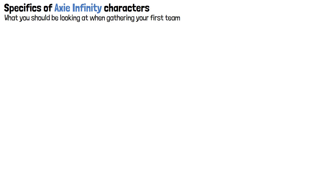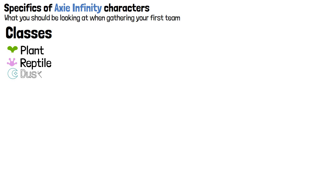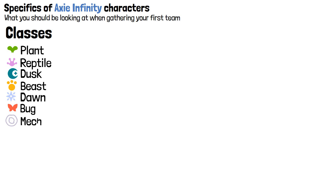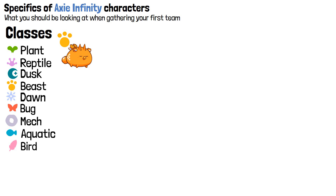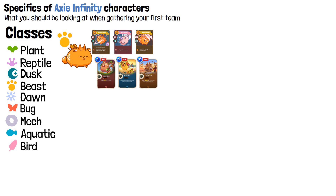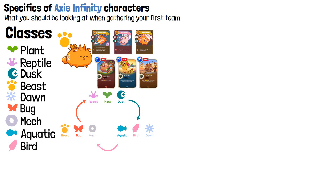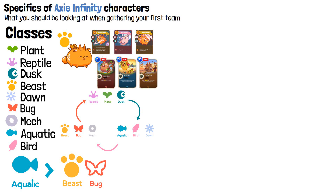In total, there are 9 different Axie classes: Plant, Reptile, Dusk, Beast, Dawn, Bug, Mech, Aquatic, and Bird. Depending on the type of Axies you possess, you can execute different attacks or defense moves on your rivals. Certain classes also have an advantage over others — for example, Aquatic has more power over Beast, Bug, and Mech Axies.